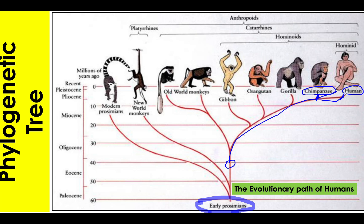So are we more closely related to the chimpanzee or to the old world monkeys? Obviously we are closer to the chimpanzees, as the old world monkey branch diverged a long time ago and is a separate branch altogether. We are closer to the chimpanzee than to the gorilla, then to the orangutan, and the gibbon as well. Although we are all on the same line of development, our branch is closest to that of the chimpanzee.